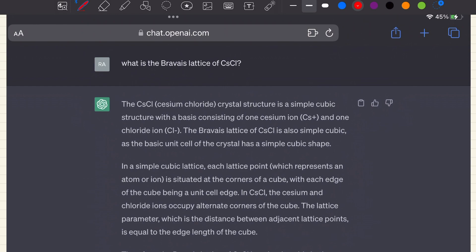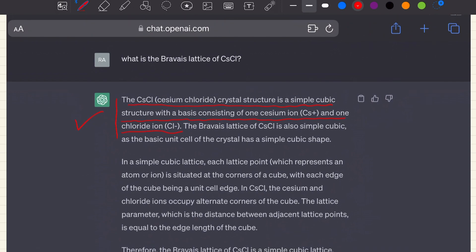So now it says that the cesium chloride crystal structure is a simple cubic structure with a basis consisting of one cesium ion and one chloride ion. Very good, well done ChatGPT. So you can see that the answer which ChatGPT will give you will also depend upon how you phrase the question.